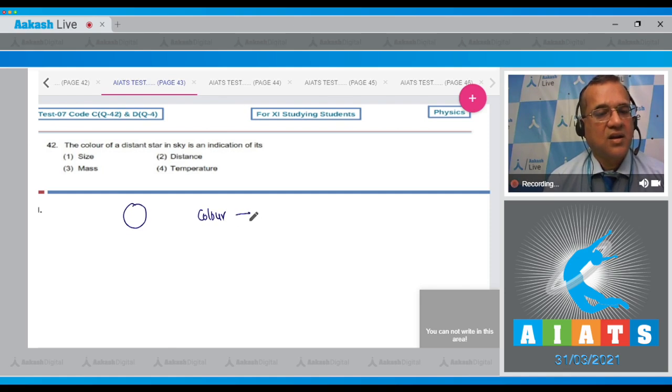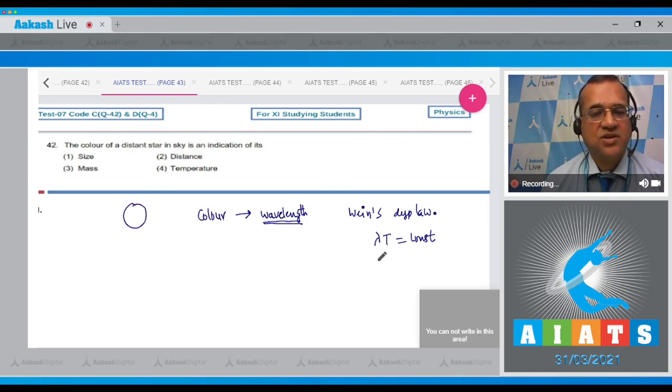Wavelength is directly influenced by its temperature, and that is from Wien's displacement law. Lambda into T is equal to a constant. Higher the temperature, shorter will be the wavelength.